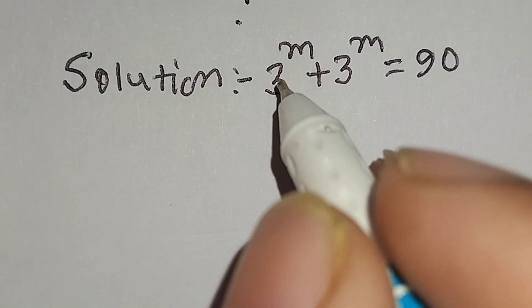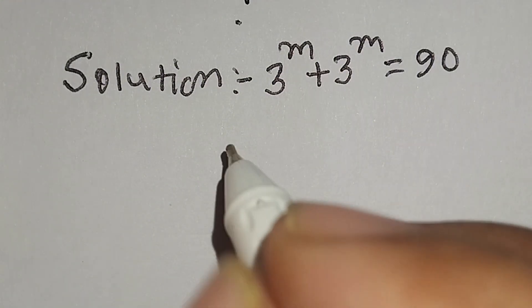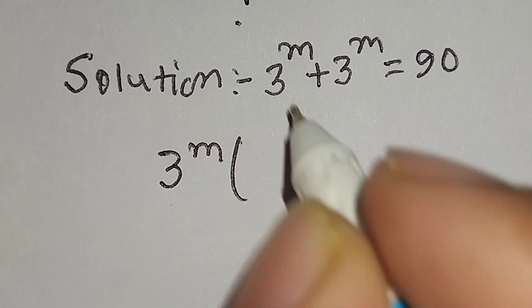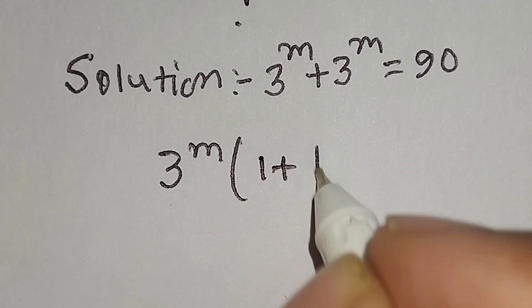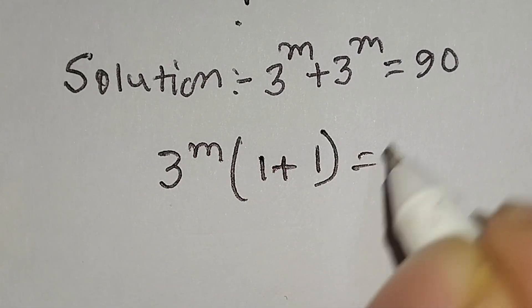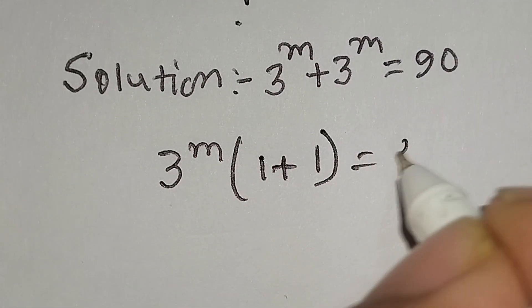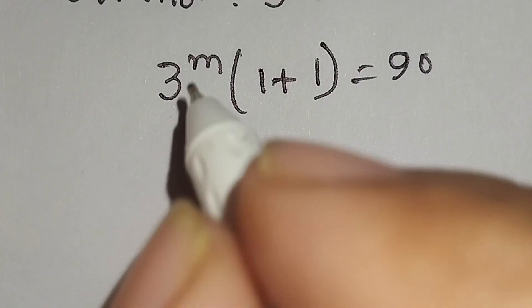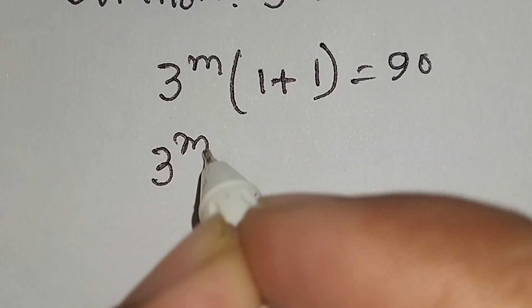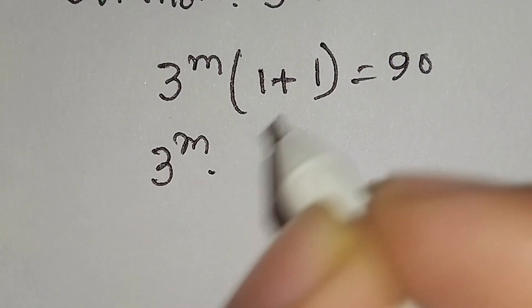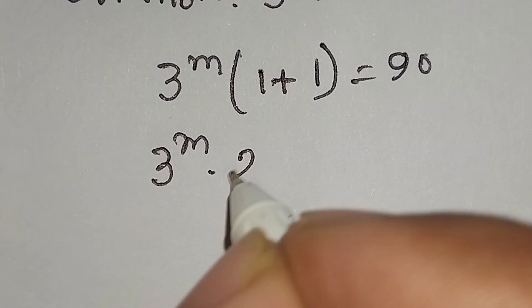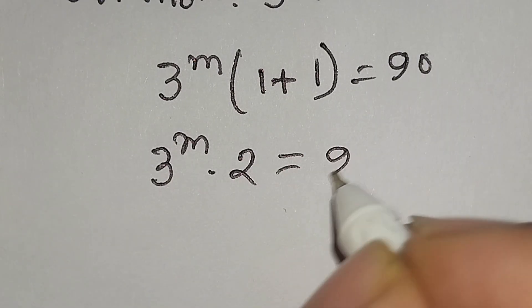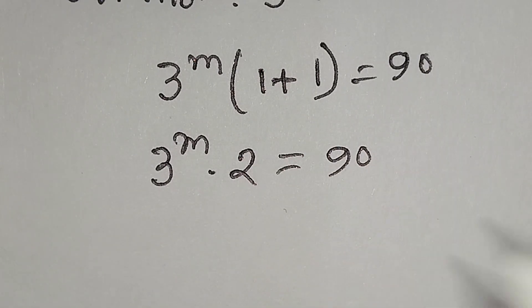From here we can take 3 to the power m as a common factor. So we can write 3 to the power m common, and 1 plus 1 is equal to 90.